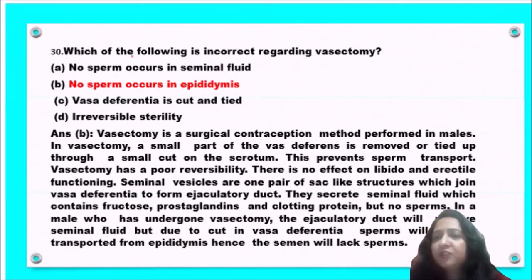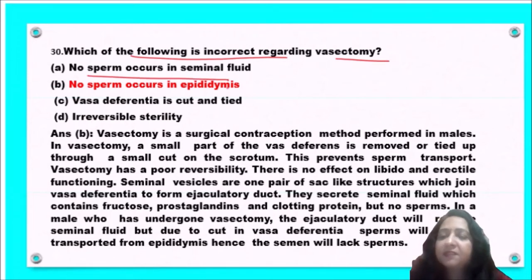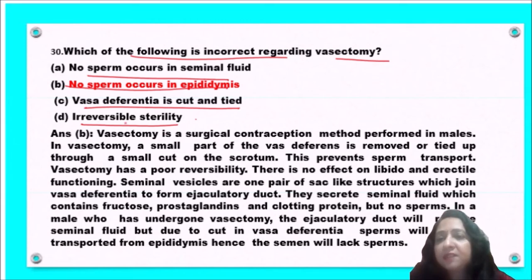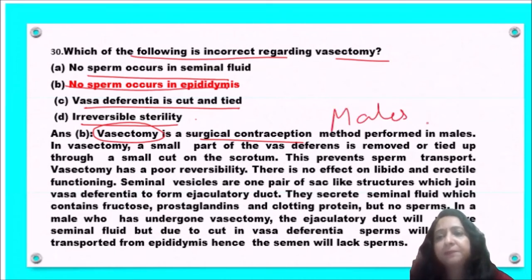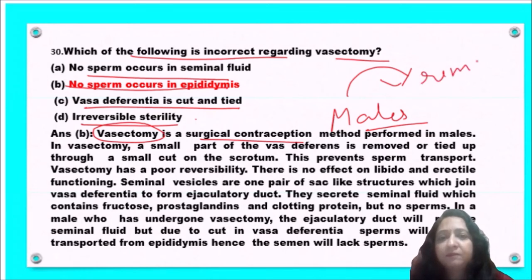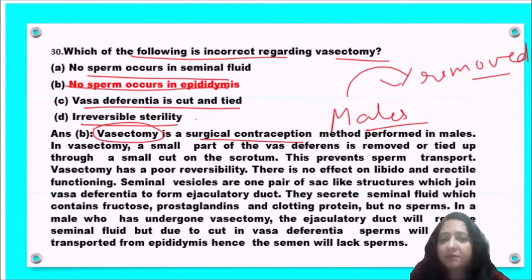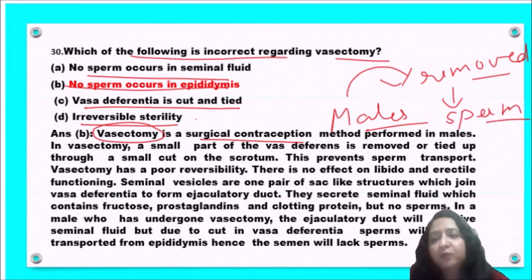Next question: which of the following is incorrect regarding vasectomy — no sperm in seminal fluid, no sperm in epididymis, vas deferens is cut and tied, or irreversible sterility? Vasectomy is a surgical contraception method used in males where a small part of the vas deferens is removed, tied up, and a small cut is made in the scrotum. This prevents sperm from entering and ultimately prevents fertilization. Option B, no sperm in epididymis, is incorrect — sperm are still produced and present in the epididymis.